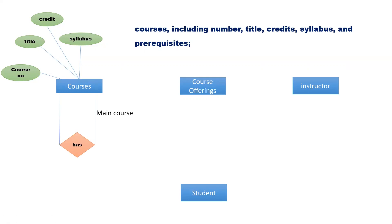One side we can map as main course, and another side we can mark it as prerequisite. This means that a course has another course as prerequisite. One course can have many prerequisites, hence the mapping constraint here is N. Similarly, one course can act as a prerequisite for many different courses, hence the mapping constraint here is N to M — that is many-to-many cardinality.